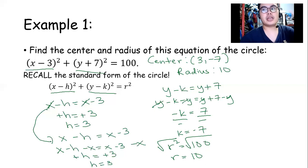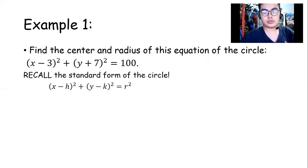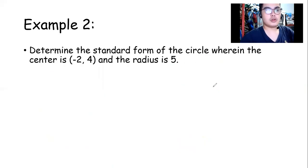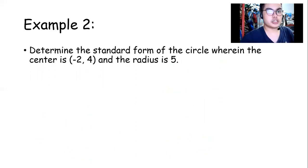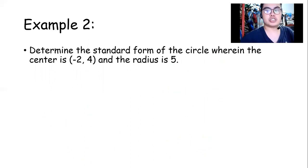So therefore, this is our center and our radius. Our next example is to determine the standard form of the circle wherein the center is (−2, 4) and the radius is 5.